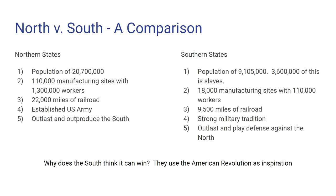The northern states are more populous — a population of 20.7 million, almost 21 million people. Southern states have a little over 9.1 million, but 3.5 million of those are slaves who can't fight, bringing it down to about 5 million. The north has a huge industrial advantage: 110,000 manufacturing sites employing 1.3 million workers, versus only 18,000 sites and 110,000 workers in the south.